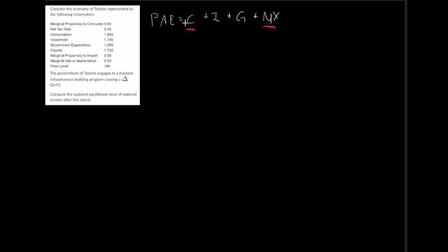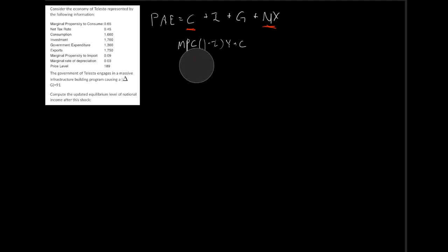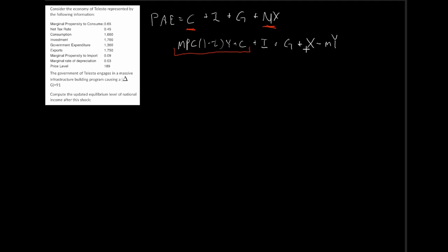Consumption is our marginal propensity to consume times one minus our tax rate, times Y, plus autonomous consumption c. Then we have autonomous investment I, government expenditure G, and our net export function, which is exports minus the marginal propensity to import times Y. So our consumption function covers that first part, and our net export function covers the last part.